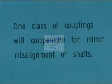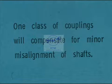One class of couplings is designed to compensate for minor misalignment between the rotating coupled shafts. We are referring only to minor misalignment, not major problems.